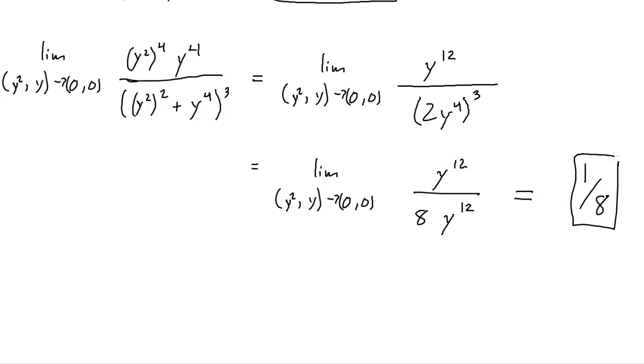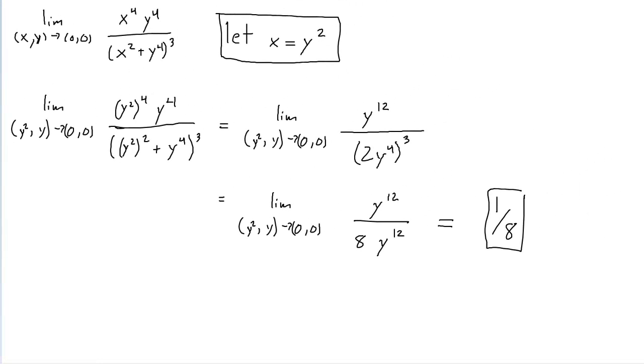So, that means this limit, this original limit here, does not exist. Along all straight lines through the origin, the limit is zero. But along this line, x equals y squared, along that curve, the limit is one eighth. So, this limit does not exist.